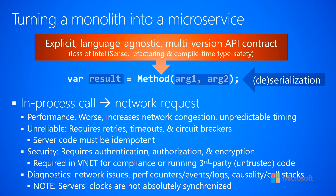Let's compare an in-process method call to an out-of-process network request. The network request is going to have much worse performance than the in-process method call, and you're going to increase network congestion, which introduces a lot of unpredictability into the time it takes to make the call.